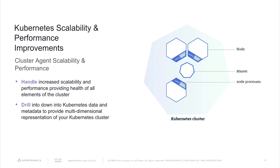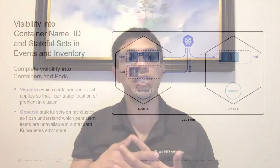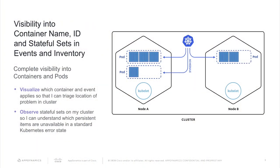We're excited to provide additional visibility into your container name, ID, and stateful sets in events and inventory. We're now able to provide complete visibility into your containers and pods. First, you're able to visualize which container an event applies to so that you can triage the location of the problem in the cluster. Second, you can observe stateful sets on your cluster so you know which persistent items are unavailable in a standard Kubernetes error state.